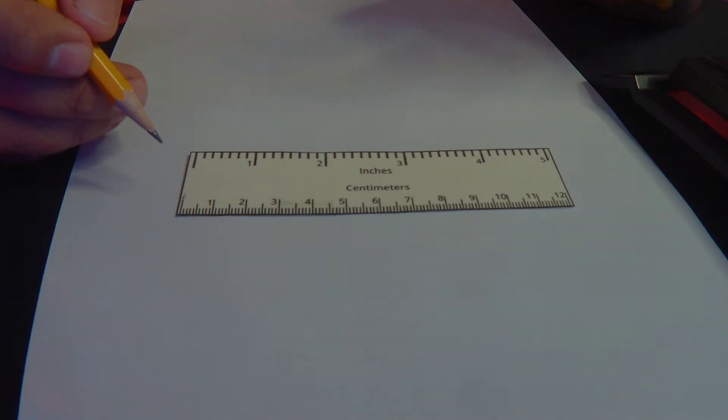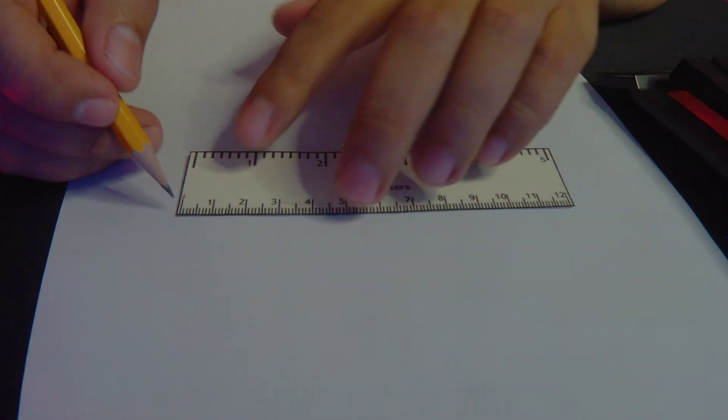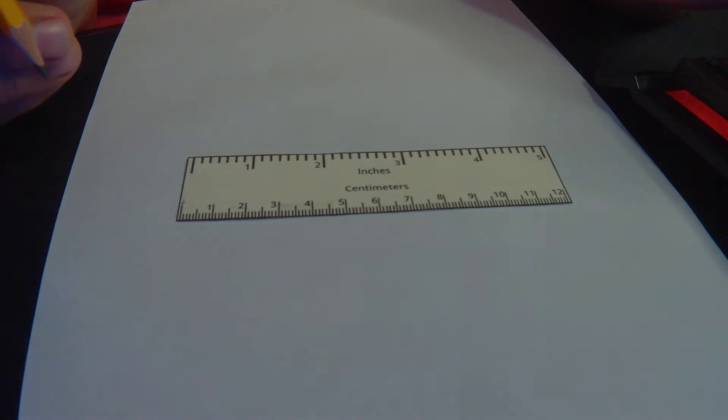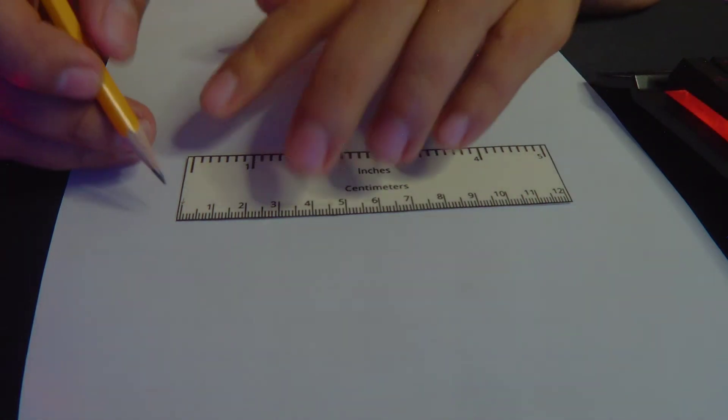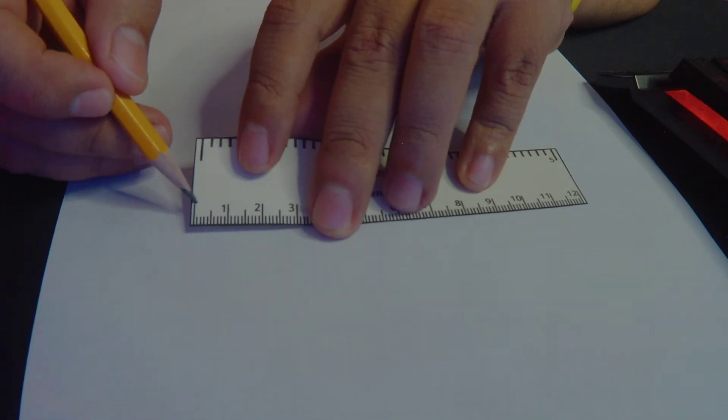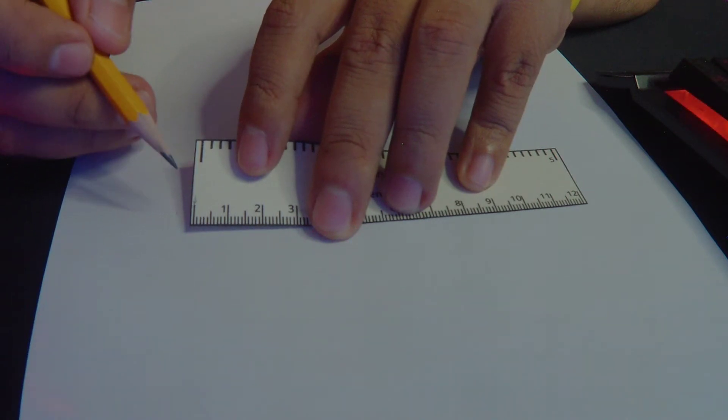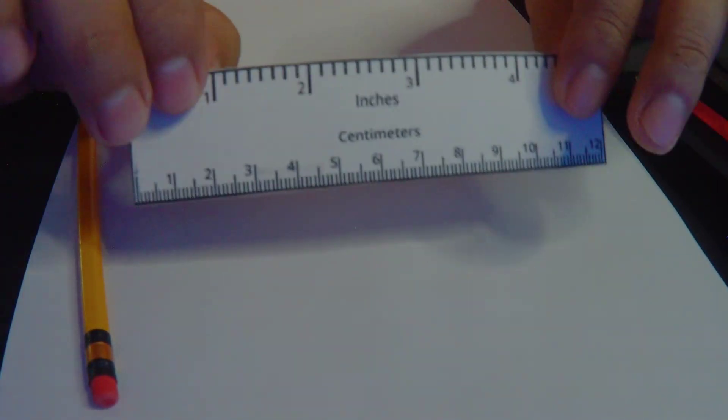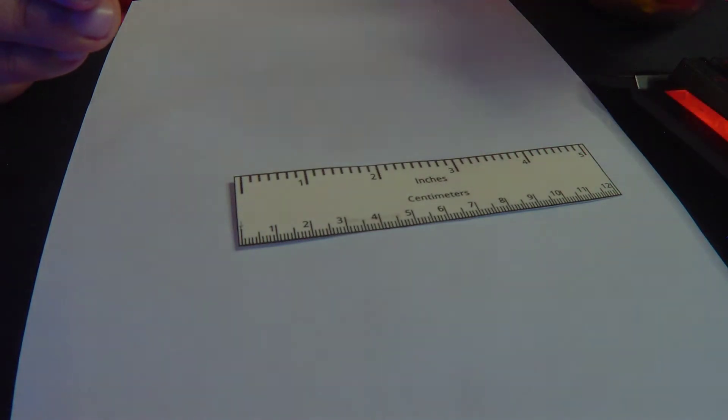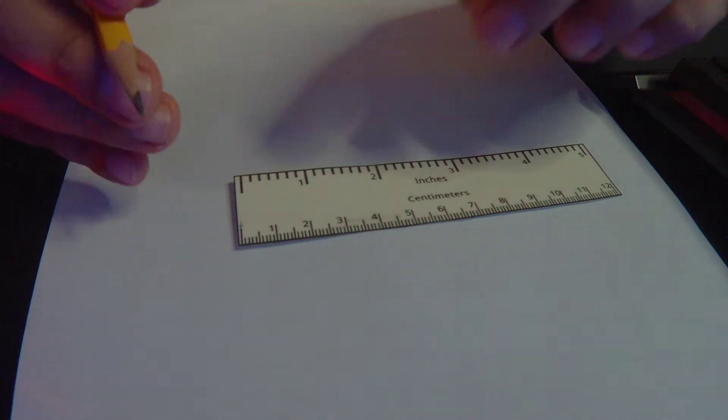Some rulers have the edge starting exactly at zero centimeters. So in that case, it's okay. But most rulers, the edge doesn't start at zero. So kindly look for the first mark. This represents the zero. Some rulers will indicate that it's zero, some don't. Like in this case, there's none. Anyway, I just printed it out because I can't find my ruler. It was just here. When you don't need it, it's there, but when you need it, it's quite hard for us to find it.